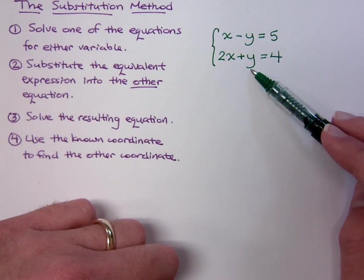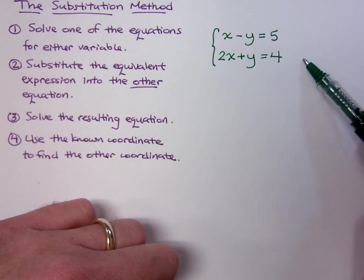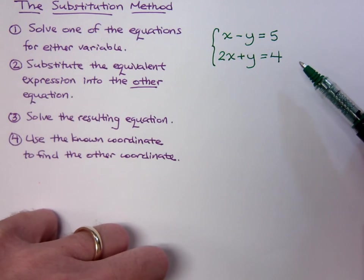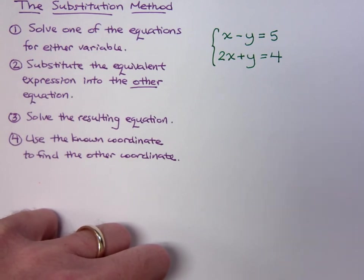If I solve for y, I just have to move the 2x over and that's nice and easy. So looking at this, trying to pick one of these equations to solve for one of the variables, I would pick either solving the first guy for x or the second guy for y.